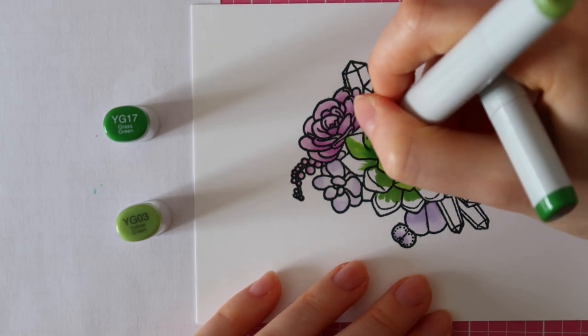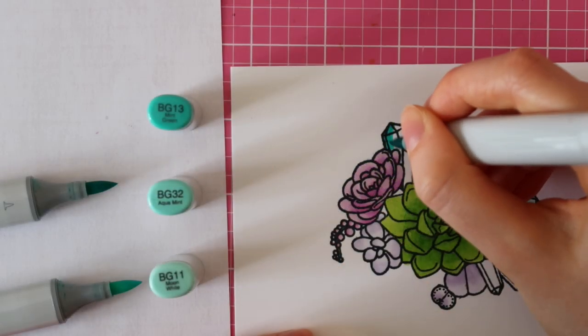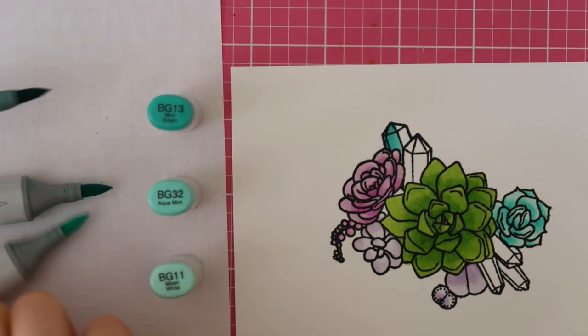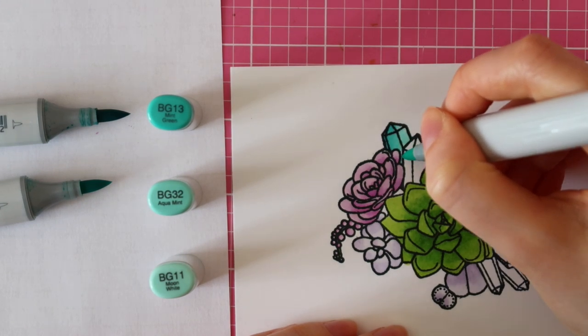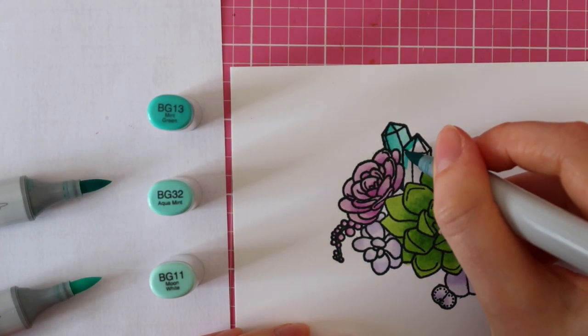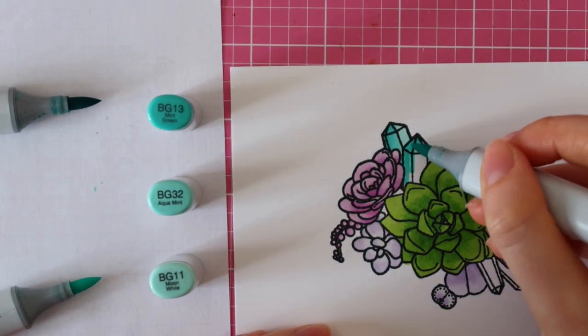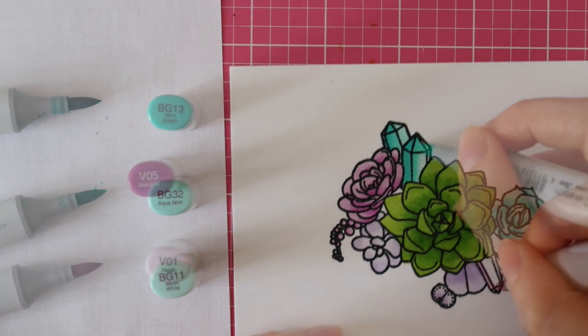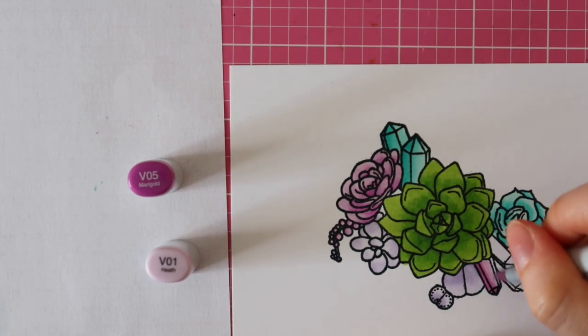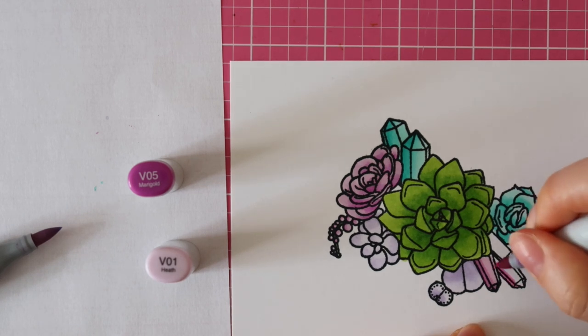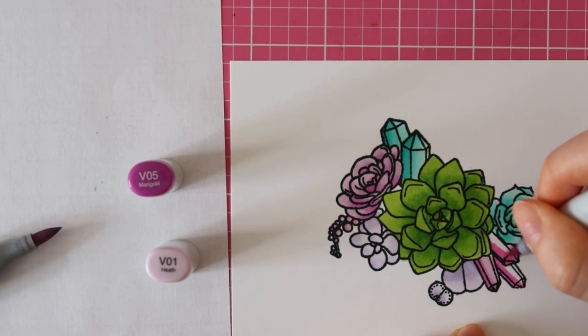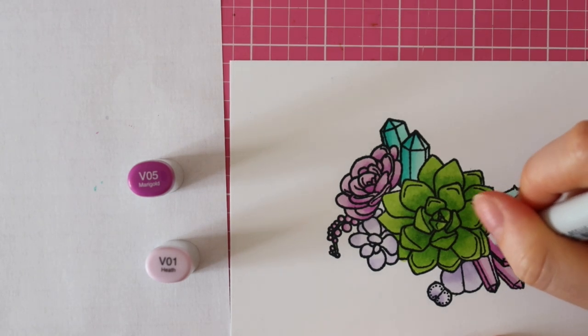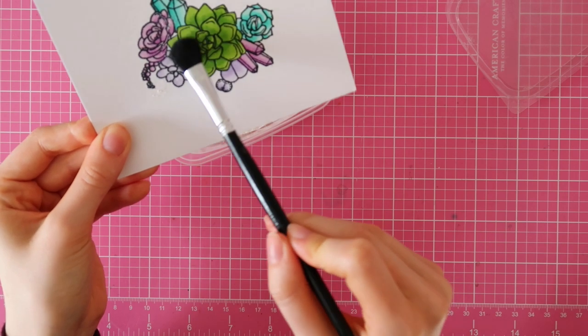So anyway, moving on to this coloring. For the green succulents, I only used two shades: YG17 and YG25. Then for these crystals, I'm using BG13, BG32, and BG11. And for the purple crystals, I used V05 and V01.